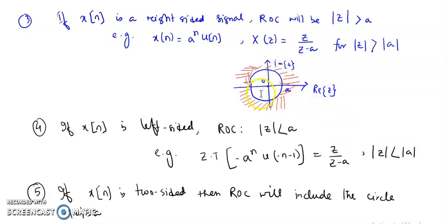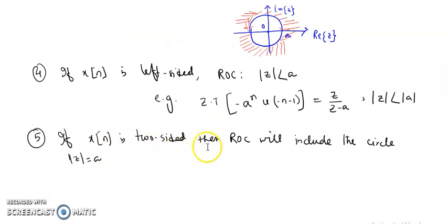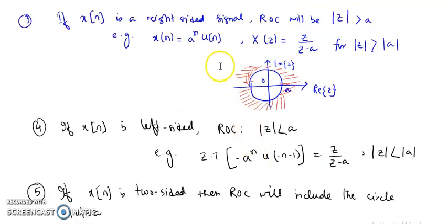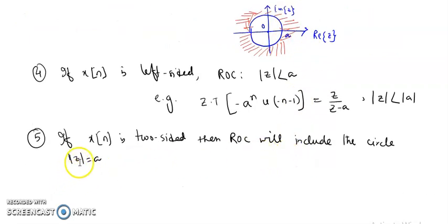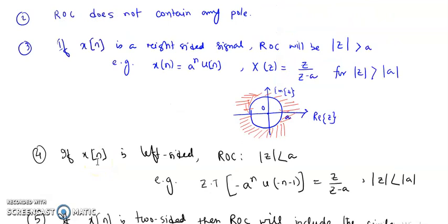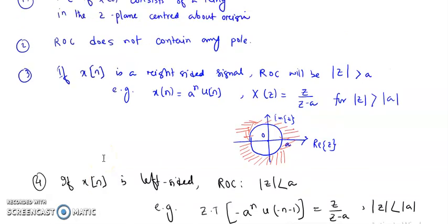If x[n] is a two-sided signal, both ROC conditions are included. If a signal is a summation of both the right-sided and left-sided signals, we get ROC on both sides — |z| > |a| and |z| < |a| — so for a two-sided signal the ROC is defined for all |a|. This is the basic concept or rule we can use for finding the region of convergence for any z-transform output.